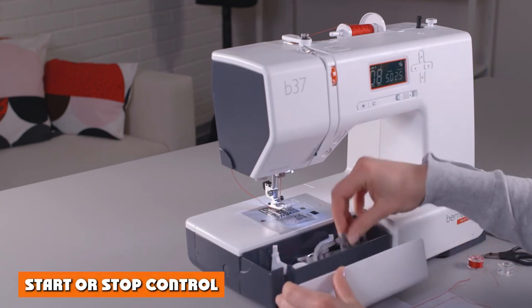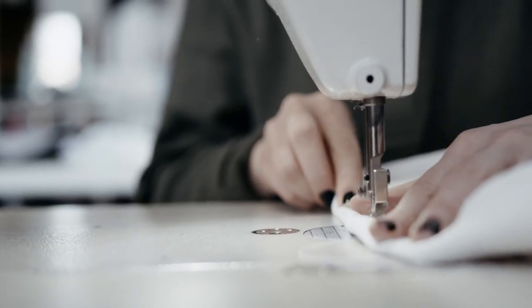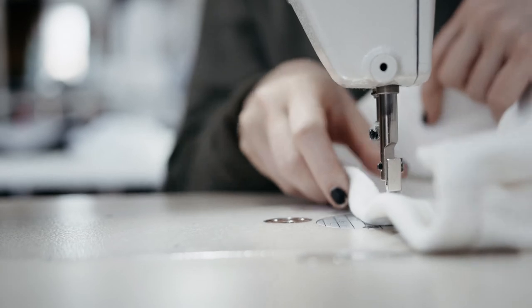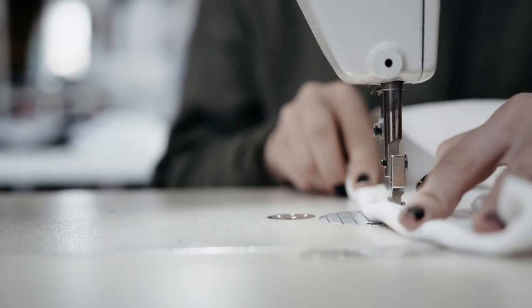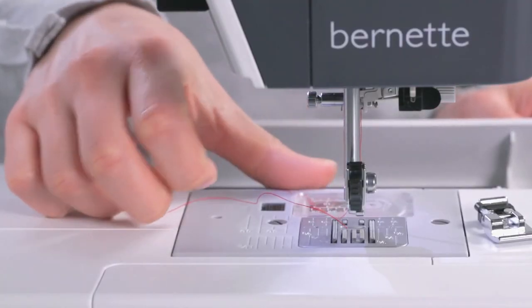Unlike most sewing machines, the Bernett B37 doesn't have to be used with the foot pedal. The machine has a start/stop button that tells the machine to run just like the foot pedal would. To adjust the speed, there is a simple slider called the Slide Speed Control that will make the machine stitch faster or slower.